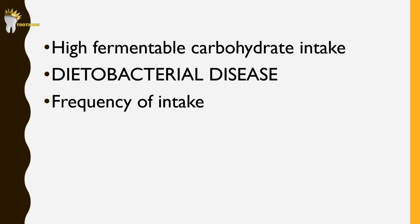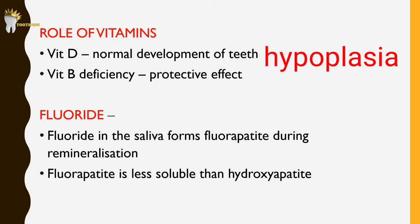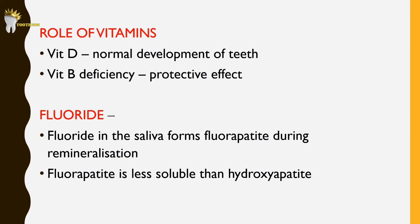Regarding vitamins: vitamin D is important for normal tooth development, and vitamin D deficiency causes tooth malformations like hypoplasia, making teeth more susceptible to caries. Vitamin B deficiency has a protective effect on caries because vitamin B is necessary for the growth of acidogenic bacteria — though it cannot be removed from the diet as it is needed for other important functions. Fluoride in drinking water also inhibits caries. When fluoride is present in saliva, fluorapatite rather than hydroxyapatite forms during remineralization — fluoride ions replace the hydroxyl groups during apatite crystal formation. Fluorapatite is less soluble than hydroxyapatite even under acidic conditions, making it more resistant to subsequent demineralization.